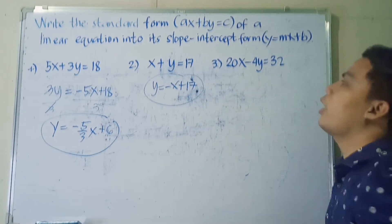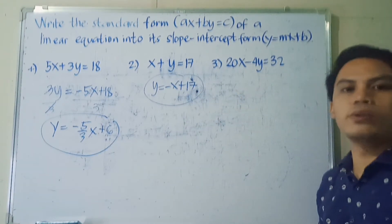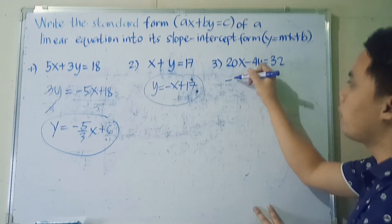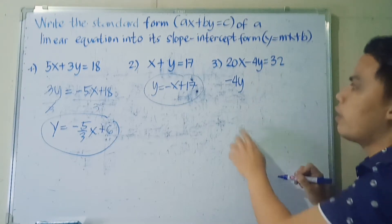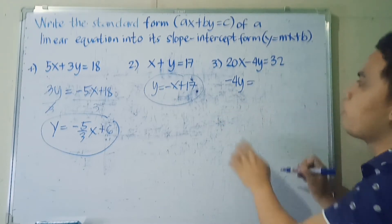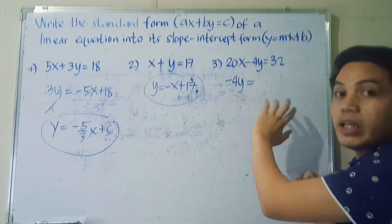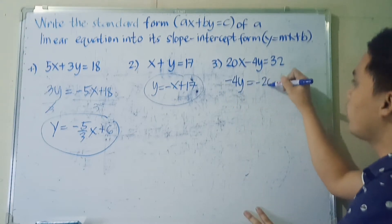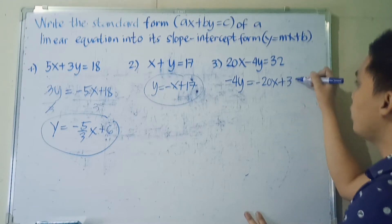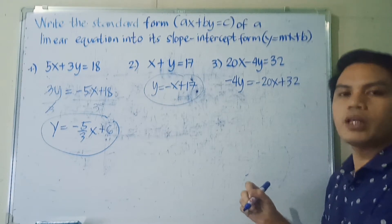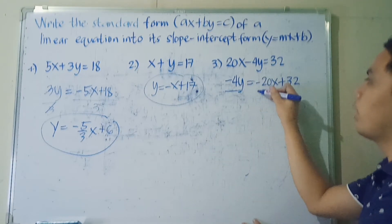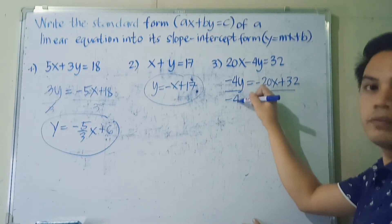Next: 20X minus 4Y is equal to 32. Again, we bring down the term with variable Y, so we have negative 4Y. Next, we transpose positive 20X to the right side of the equation, so it becomes negative 20X, then bring down the constant positive 32. Then we divide both sides by negative 4.